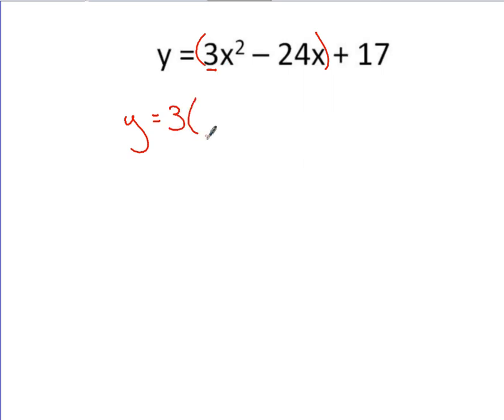I take the 3 out, I've got an x-squared here as the new lead term inside the parentheses, minus, 3 goes into 24, 8 times with that x. And working inside the parentheses here, I'll be able to complete the square now. On the outside, I've got that plus 17.